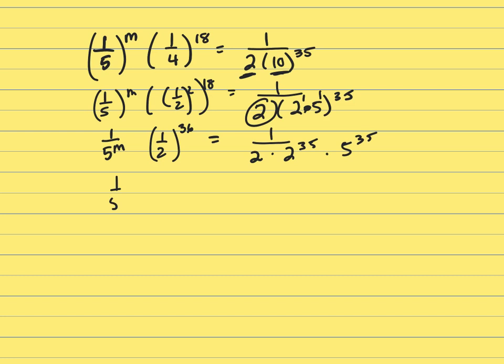So I have 1 over 5 to the M and 1 over 2 to the 36th. And look here, you're multiplying like bases, so add your exponents. That's 1 over 2 to the 36th. So that's matching perfectly with this side.